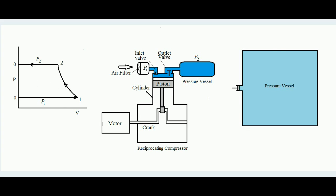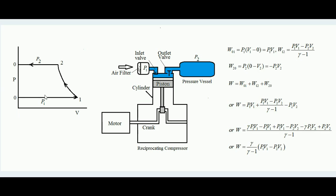The work done is calculated as follows. In thermodynamics, work done is p·dv. For process 0 to 1 (isobaric at p1): work done = p1 × (v1 − 0). For process 1 to 2 (adiabatic compression): work done = (p1·v1 − p2·v2) / (γ − 1). For process 2 to 0 (isobaric at p2): work done = p2 × (0 − v2) = −p2·v2.